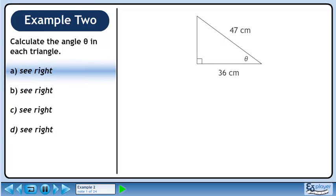Calculate the angle theta in each triangle. Label the sides of the triangle. We know the adjacent and hypotenuse, so let's use the cosine ratio to find the unknown angle. The adjacent side is 36 cm and the hypotenuse is 47 cm. Divide to get 0.7660.